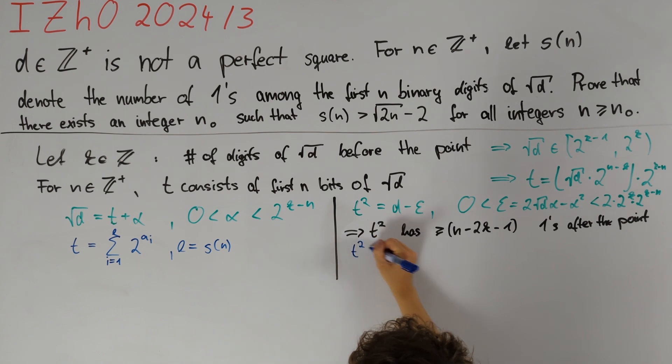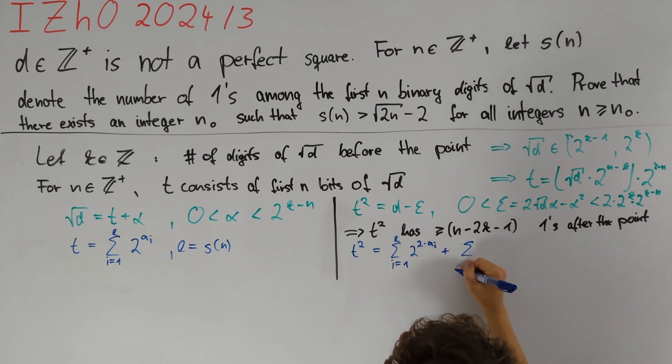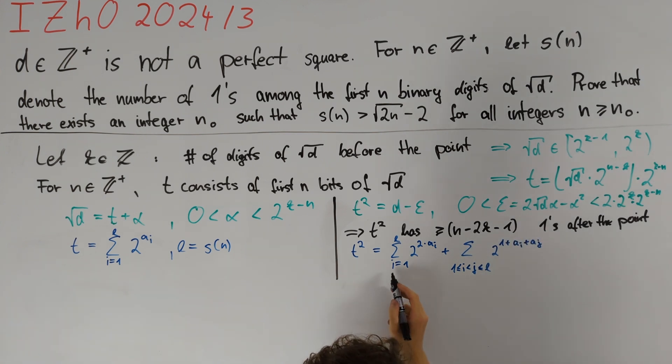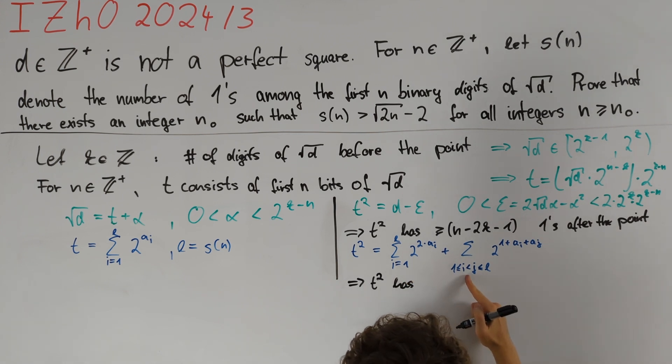On the other hand, t squared equals the sum of i going from 1 to l of 2 to the power of 2 times aᵢ plus the sum of 1 less than or equal to i less than j less than or equal to l of 2 to the power of 1 plus aᵢ plus aⱼ. In the best case, all of these summands are pairwise distinct, and therefore t squared has at most l plus l choose 2 number of ones in its binary representation.